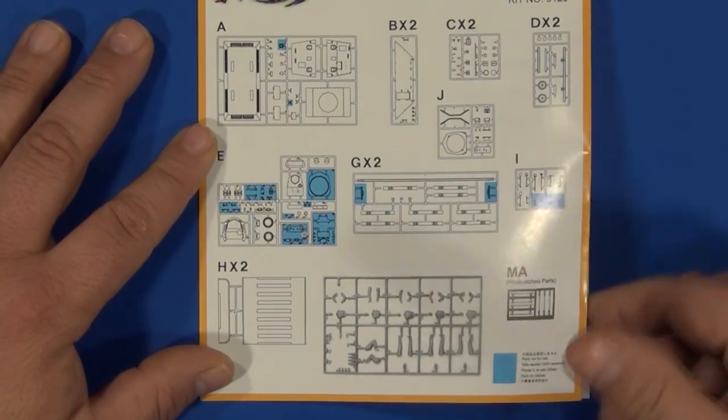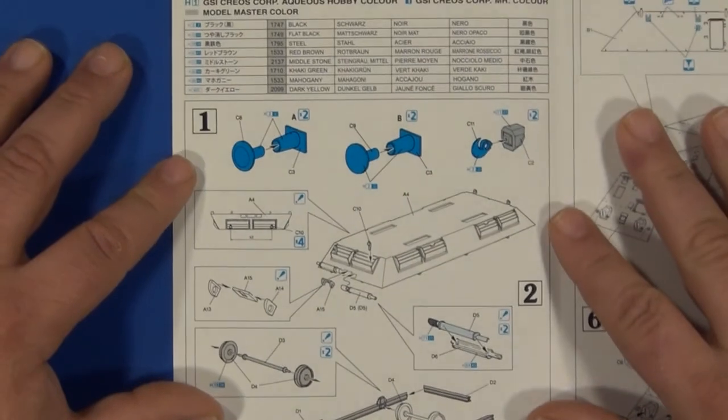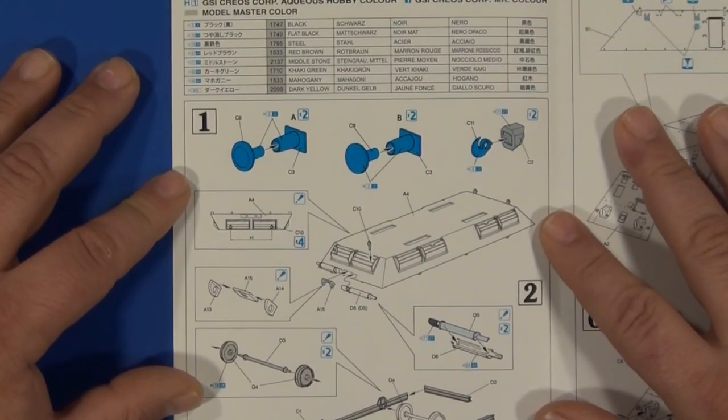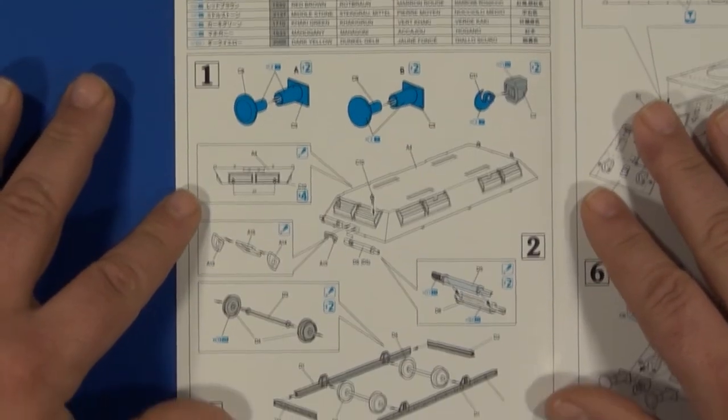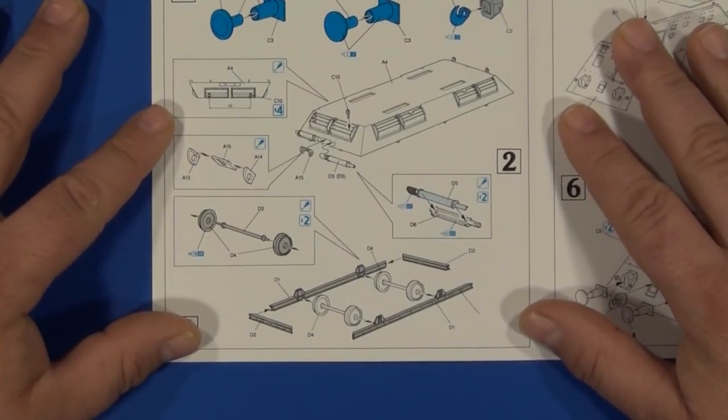Step one: bumper stops and tow hooks. Step two: mufflers, wheels, and axles.